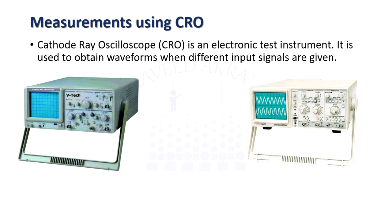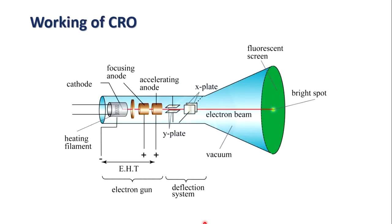Now, why is it called cathode ray oscilloscope? The reason is that it traces the waveform using a beam of electrons, and the beam of electrons is also called cathode ray. Now let's see how CRO works — this is an internal diagram of CRO.